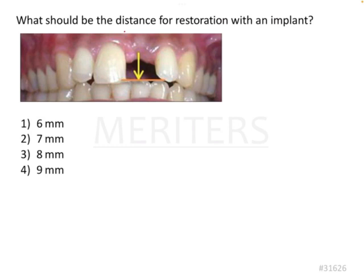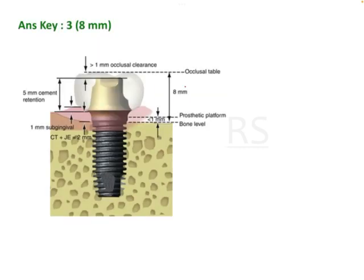What should be the distance for restoration with an implant? This is a numeric, straightforward theoretical question. If the implant is here, how much should be the distance of this restoration from the implant? The options are 6mm, 7mm, 8mm, and 9mm. This is a direct pick from MISH, where the desired or minimum distance of the restoration from the implant abutment junction to the IHA is given as 8mm.